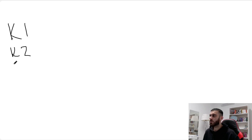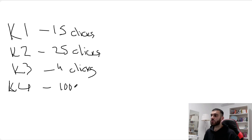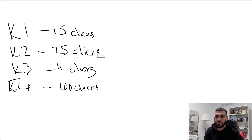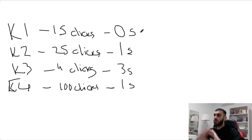Let's imagine we have four keywords. Keyword one gets 15 clicks, keyword two gets 15 clicks, keyword three gets 25 clicks, keyword four gets 4 clicks, and keyword five gets 100 clicks — all in the first month. Now, Amazon doesn't just look at the clicks; it looks at your sales as well. So keyword one got zero sales, keyword two got one sale, keyword three got three sales, and keyword four got one sale.